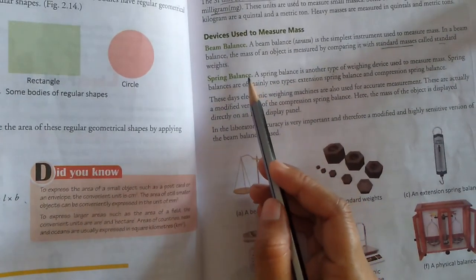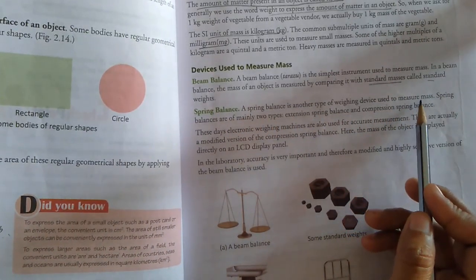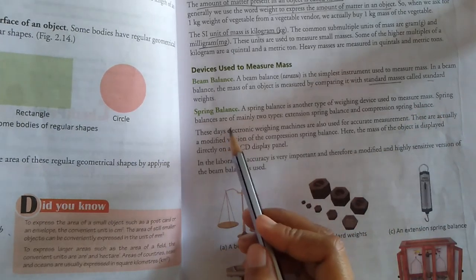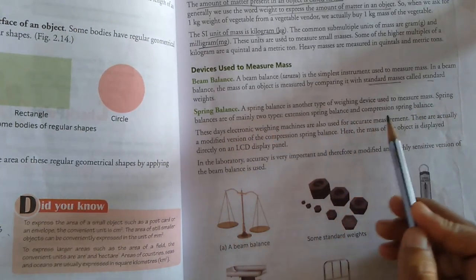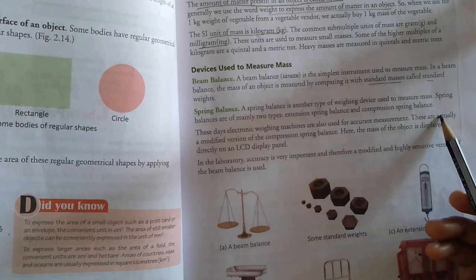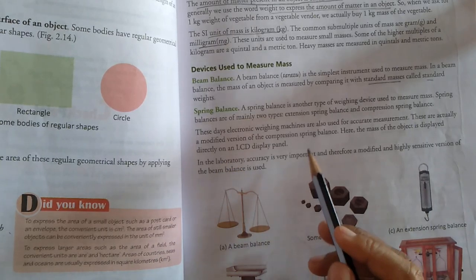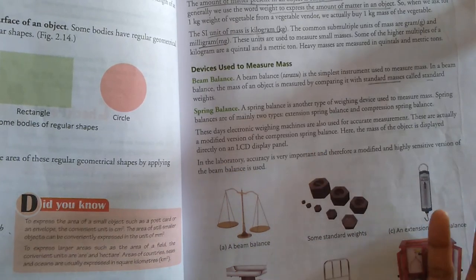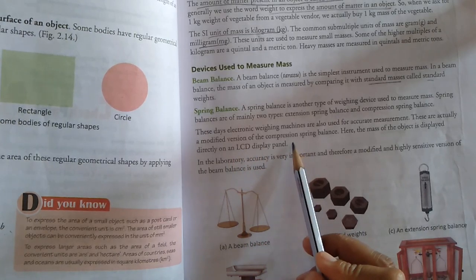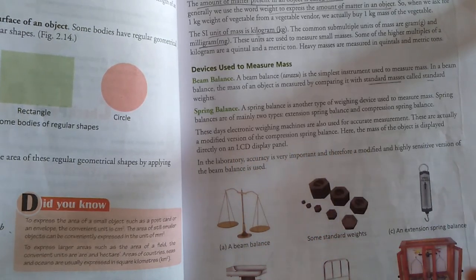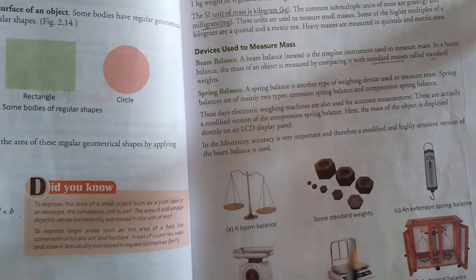A spring balance is another type of weighing device used to measure mass. Spring balances are mainly of two types: extension spring balance and compression spring balance. These days electronic weighing machines are used for accurate measurements. These are actually a modified version of compression spring balance. Here the mass of an object is displayed directly on the LED display panel.